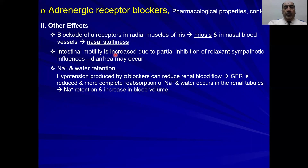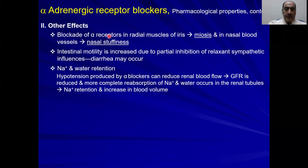The sympathetic nervous system also inhibits intestinal motility. If you use alpha blockers, the inhibition of this sympathetic influence is removed, intestinal motility will increase, and diarrhea may occur.